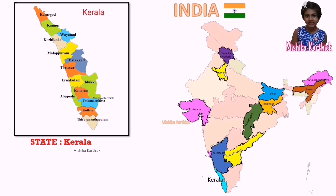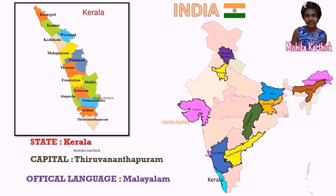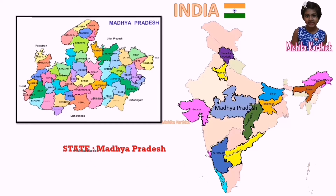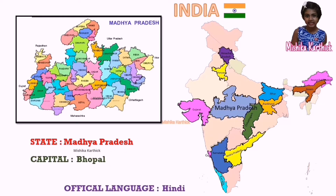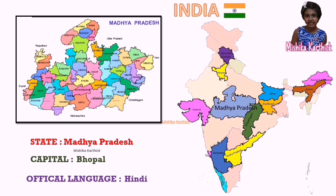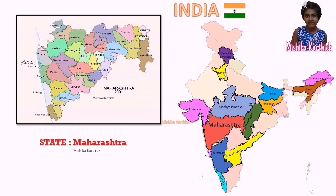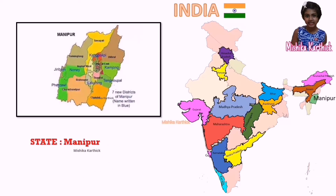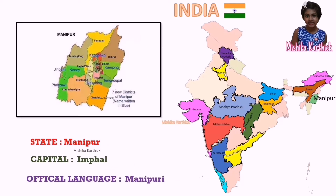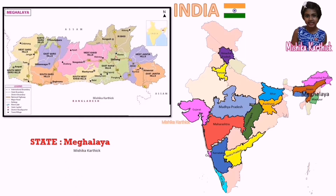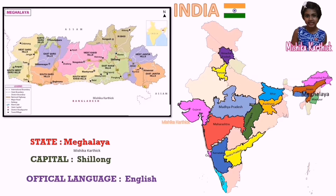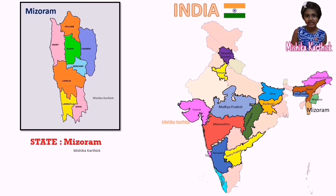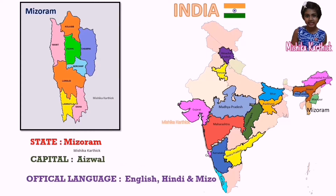Kerala, capital Thiruvananthapuram, language Malayalam. Madhya Pradesh, language Hindi and English. Mizoram, language Hindi, English and Mizo.